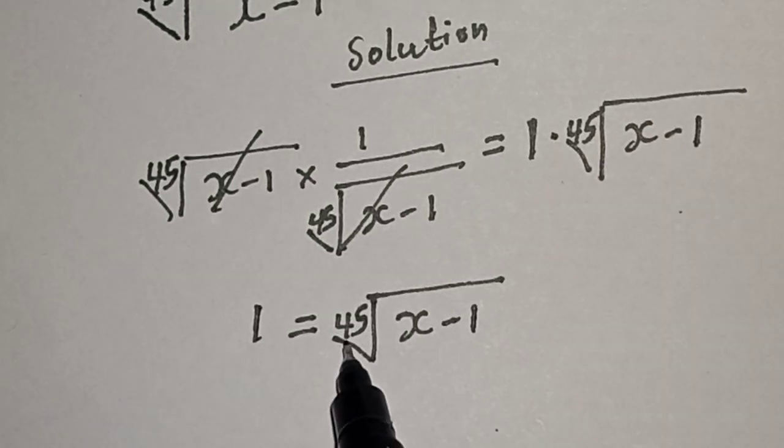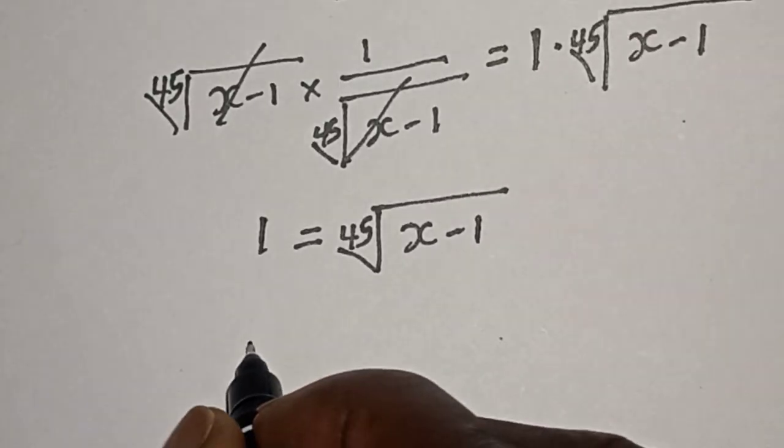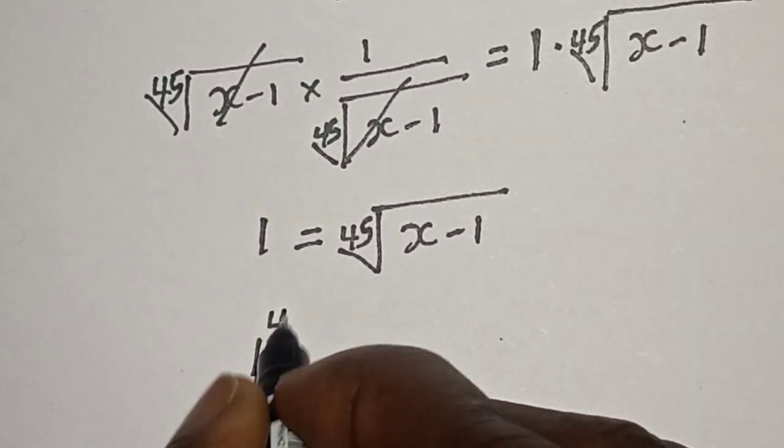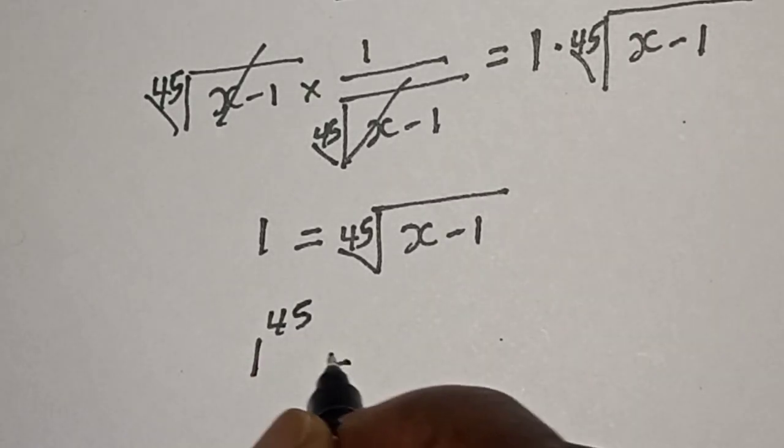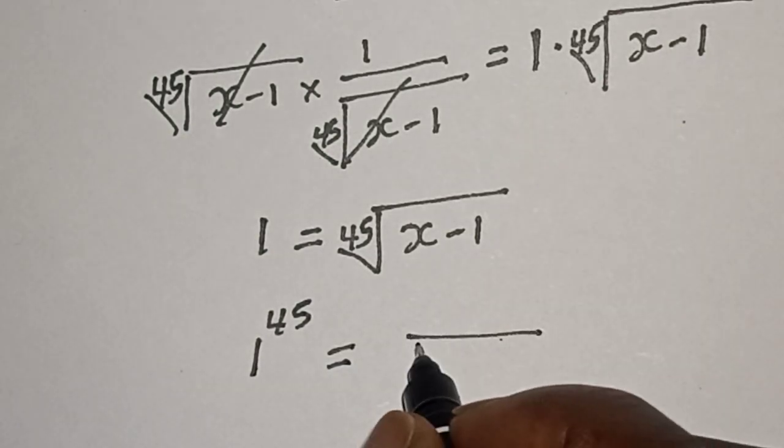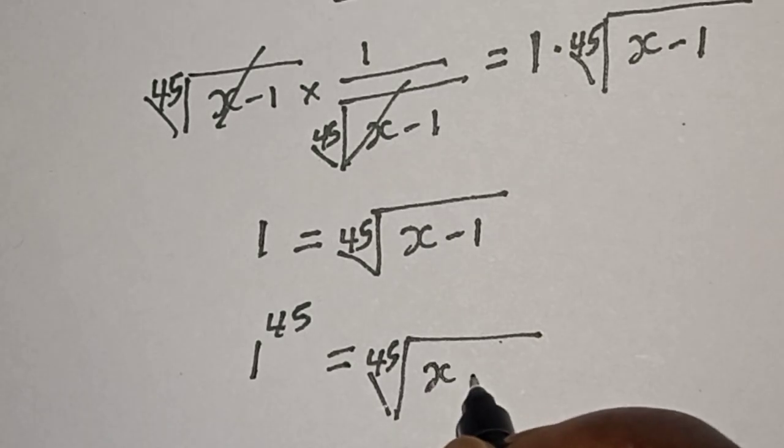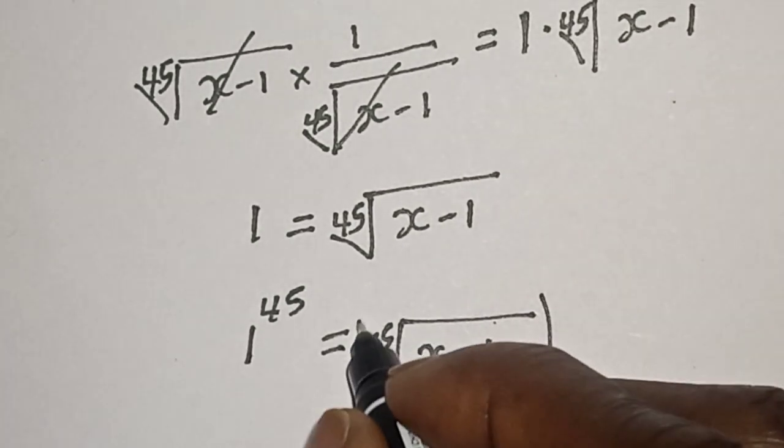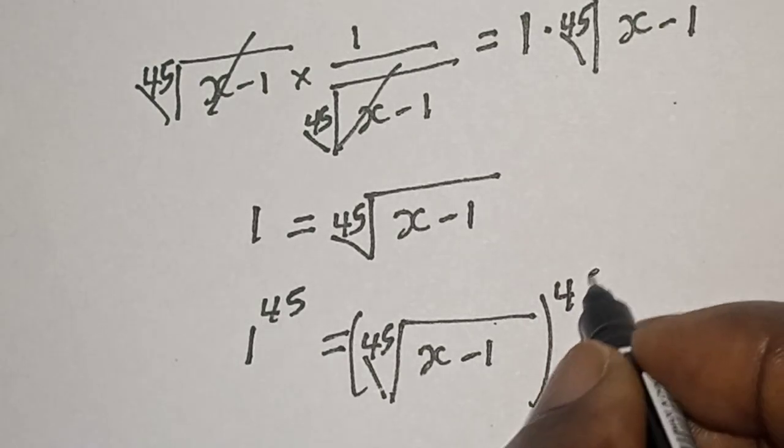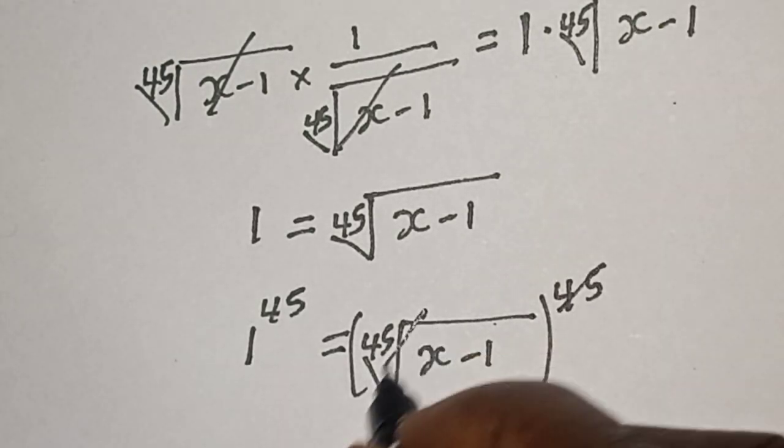Let's take the power of both sides by 45. That is, 1 raised to the power of 45 is equal to 45 root of x minus 1 raised to the power of 45. This one will cancel this.